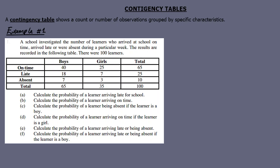Example number one. A school investigated the number of learners who arrived on time, arrived late, or were absent during a particular week. So our characteristics are: on time, arrived late, and absent. We have two groups — boys and girls. By adding our characteristics, that's when you have to use contingency tables.